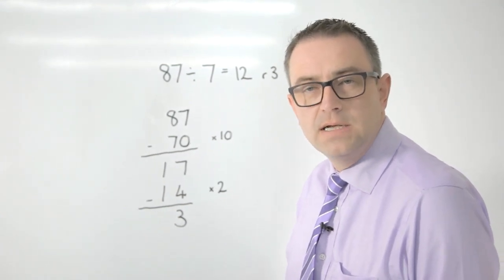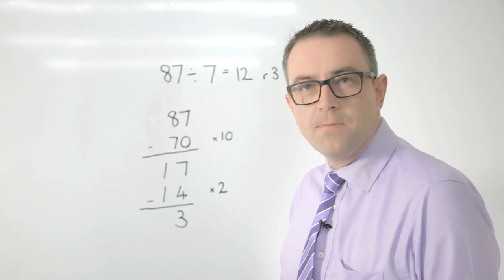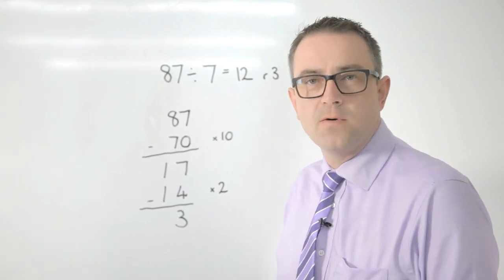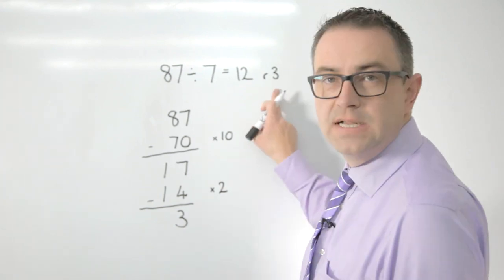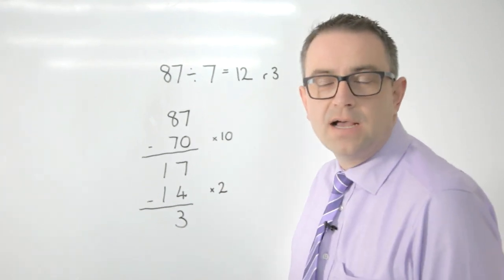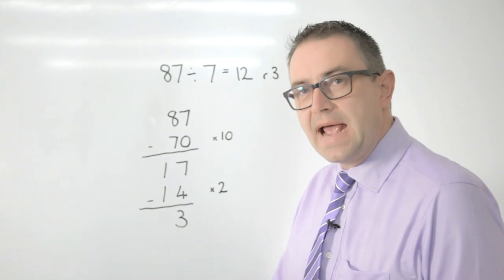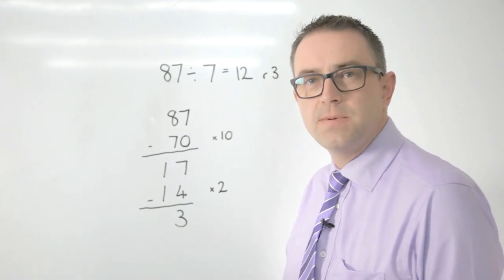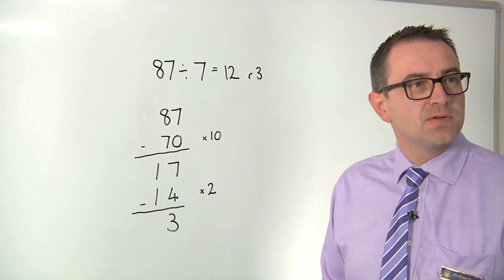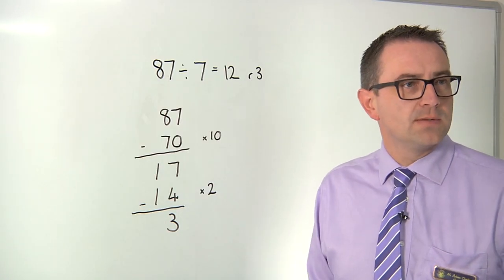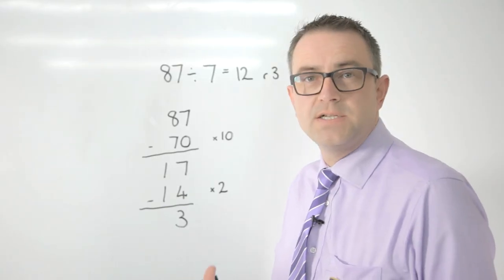If the question's asking about how many tents are needed for example for a school trip away, then obviously we can't have three children outside at night, and so we'd need an extra tent. So there are times depending on the question where the child not only has to work out there is a remainder, but they have to work out whether to round up or down.